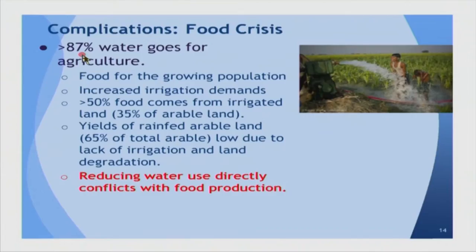Since we are talking about irrigation and agriculture, roughly 50 percent of our food comes from irrigated lands and the rest from rain-fed lands. About 35 percent of India's arable land is irrigated and 65 percent is rain-fed — these are rough numbers. What this tells you is that irrigated lands are highly productive, or relatively more productive compared to rain-fed lands, which is kind of obvious.